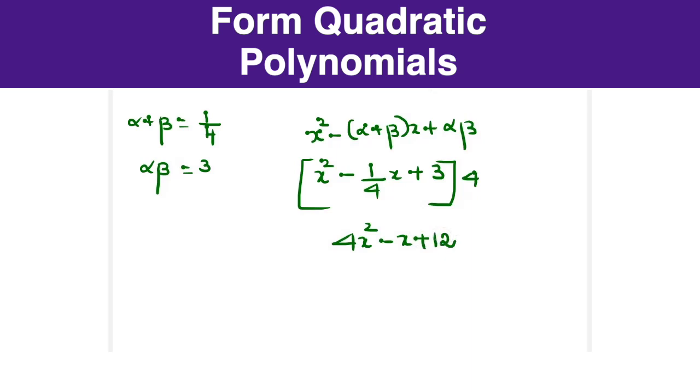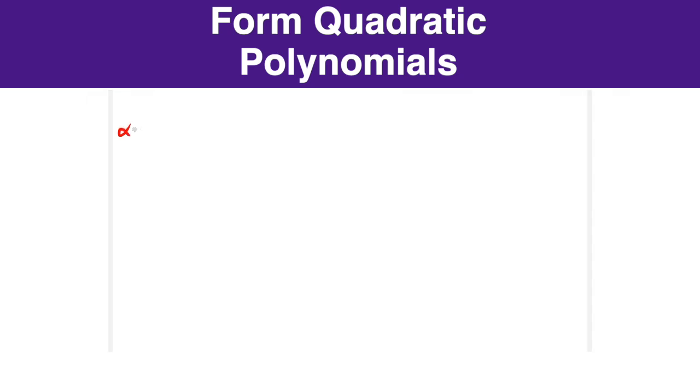Let us take one more example. Alpha plus beta equals √3 and alpha beta equals 2. To form this equation we are going to substitute in the general format x² minus (alpha plus beta)x plus alpha beta. So in this case it is x² minus √3x plus 2 equals 0.